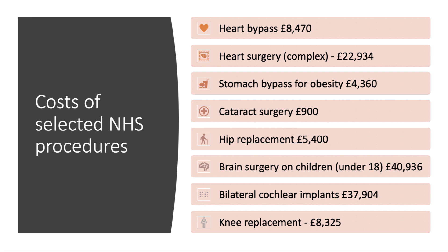You can see that some procedures are extremely expensive. Complex heart surgery costs more than £22,000. Brain surgery on children under the age of 18, and bilateral cochlear implants, are also very expensive — costing over £40,000 to provide.